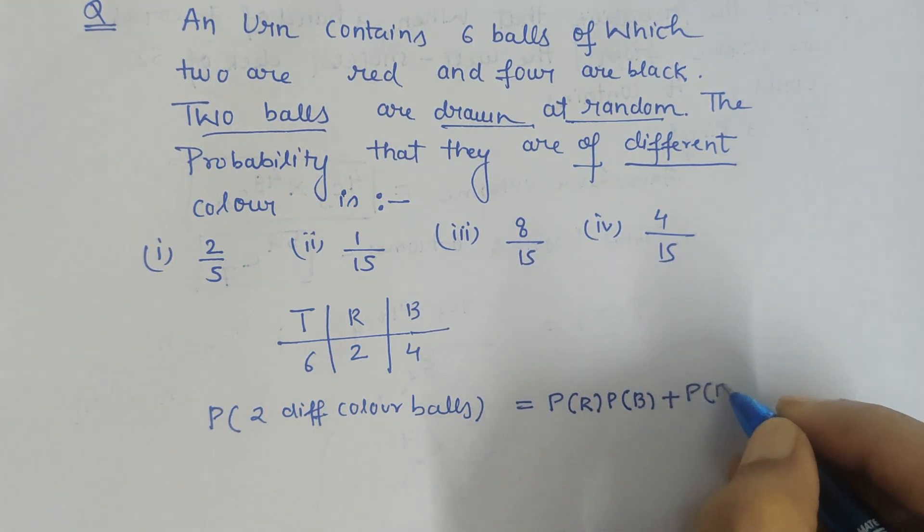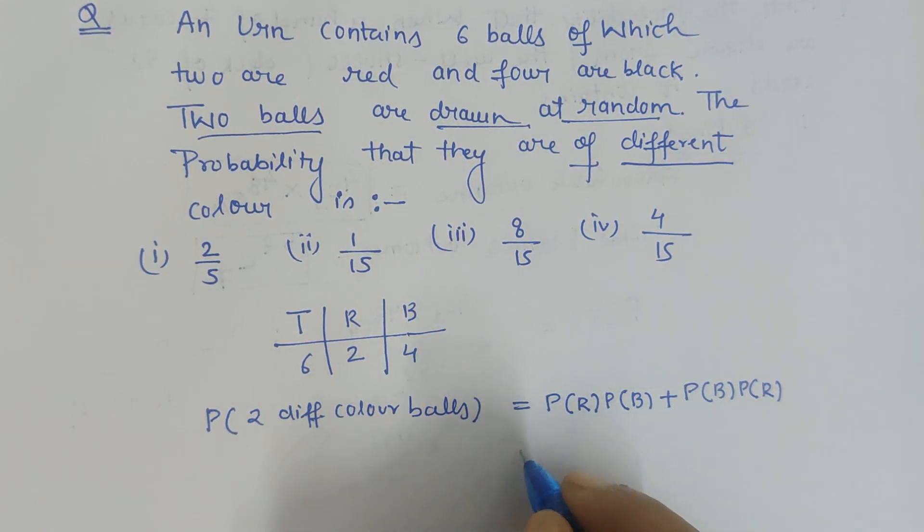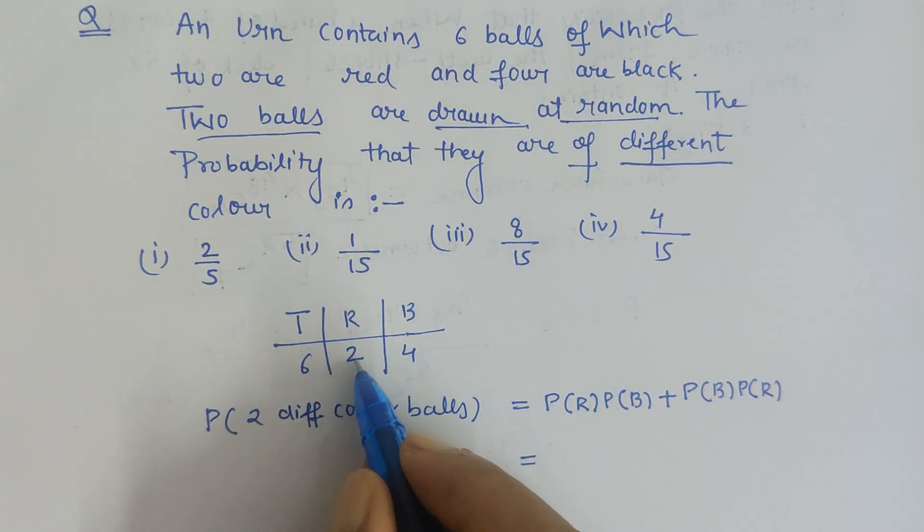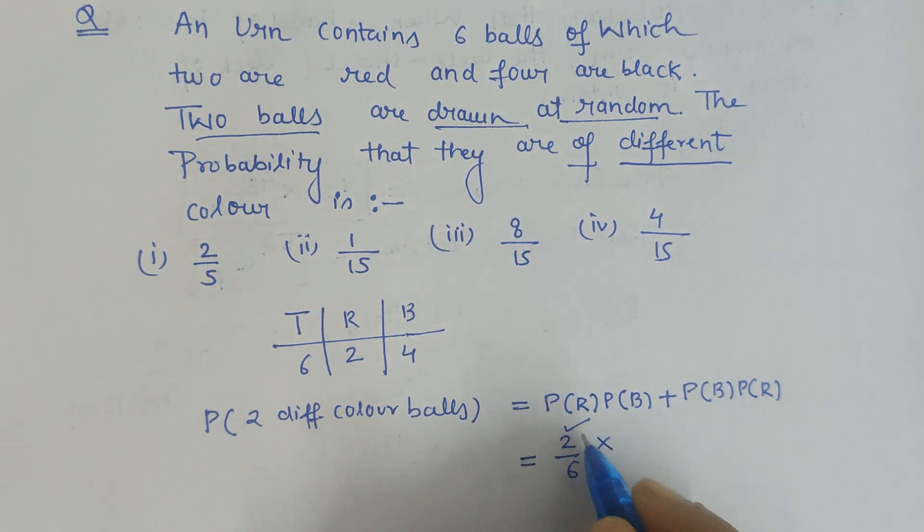This is one way of writing the probability, and here we have used the theorem of total probability. So probability of drawing the first ball and it being red would be 2/6, because there are total six balls. Now as one ball is drawn already, the total balls left is five. And black balls we have four, so 4/5.